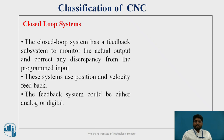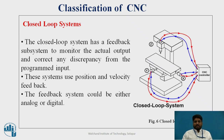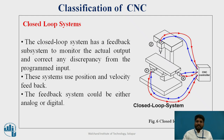In the closed loop system, there is a feedback subsystem to monitor the actual output and correct any discrepancy from the programmed input. This system uses position and velocity feedback. The feedback system can be either analog or digital. In figure 6, the CNC control sends a signal to the spindle as well as the workpiece and receives feedback from them. It confirms the correct position, correct velocity, and that operations are performed correctly. If any wrong step is taken, corrective measures are applied and the feedback is sent back to the CNC controller.